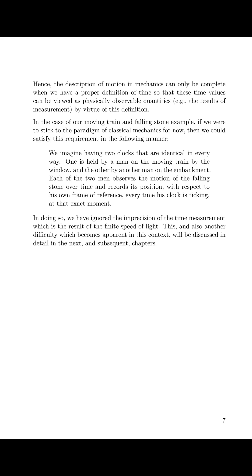In the case of our moving train and falling stone example, if we were to stick to the paradigm of classical mechanics for now, then we could satisfy this requirement in the following manner. We imagine having two clocks that are identical in every way. One is held by a man on the moving train by the window and the other by another man on the embankment. Each of the two men observes the motion of the falling stone over time and records its position with respect to his own frame of reference every time his clock is ticking at that exact moment. In doing so, we have ignored the imprecision of the time measurement, which is the result of the finite speed of light. This, and also another difficulty which becomes apparent in this context, will be discussed in detail in the next and subsequent chapters.